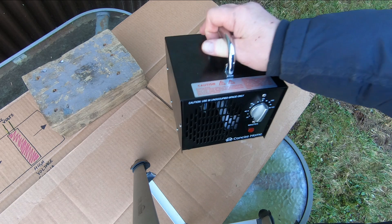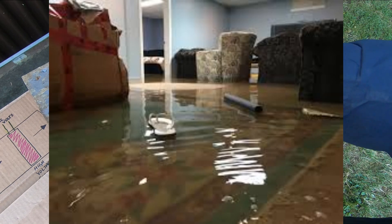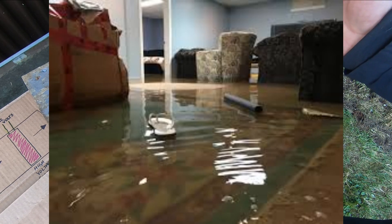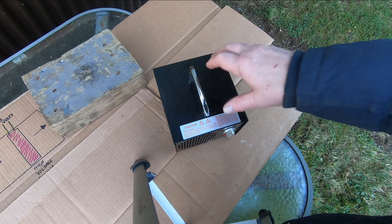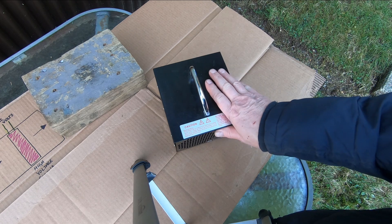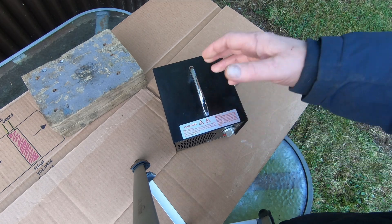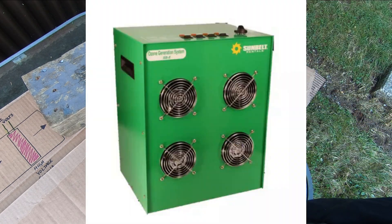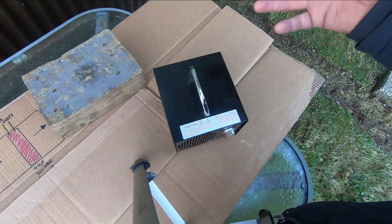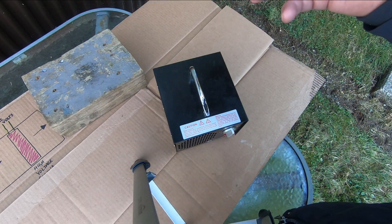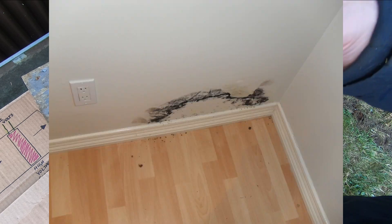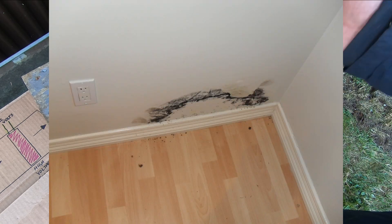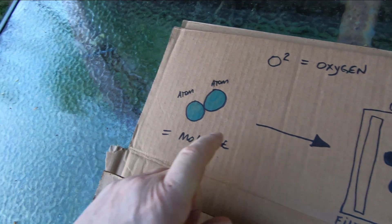So if you've had a flood, for instance, and you end up with your drywall all being moldy, these contractors will come in — they'll have much larger units than this — and they'll run these machines. What they do is they take out that mold, and they take out those smoke odors and things like that from a building.